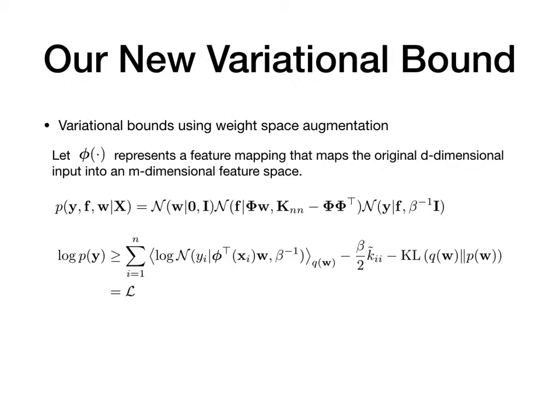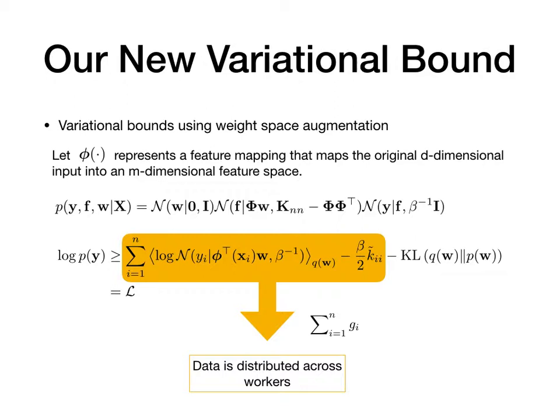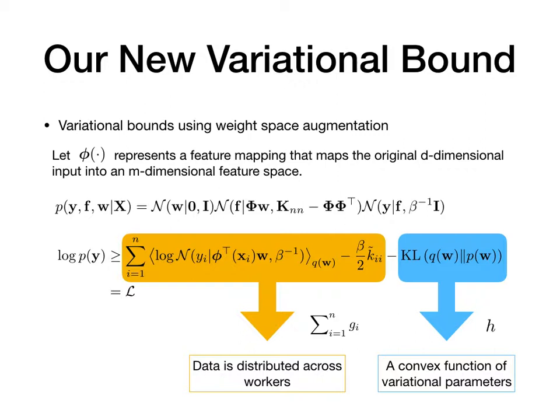This lower bound has two parts. The first part can be decomposed by data points and distributed across workers. The second part is only a KL divergence between two Gaussians, which can be seen as a convex function that only depends on the variational parameters.